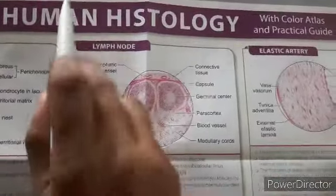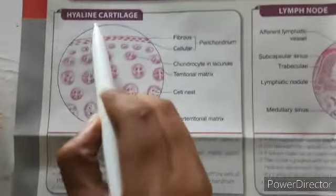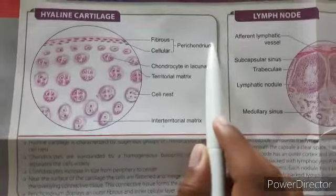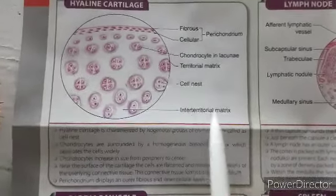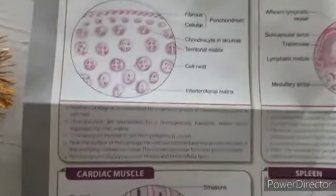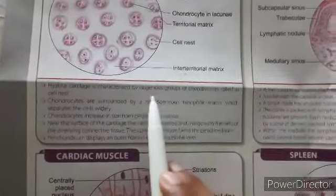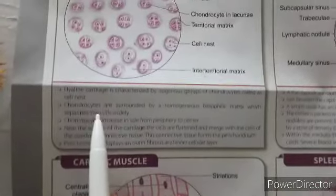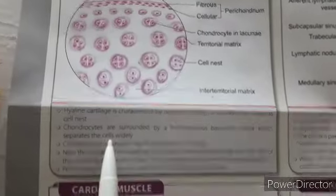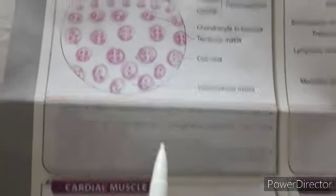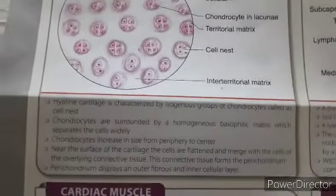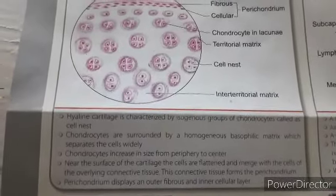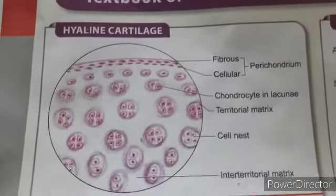Today we are going to do the human histology revision. This is the hyaline cartilage — hyaline means glass. Visible structures include the fibrous layer, cellular layer forming the perichondrium, chondrocytes in lacunae, territorial matrix, cell nest, and interterritorial matrix. Hyaline cartilage is characterized by isogenous groups of chondrocytes called cell nests. Chondrocytes are surrounded by a homogeneous basophilic matrix. The connective tissue forms the perichondrium, which displays an outer fibrous and inner cellular layer.